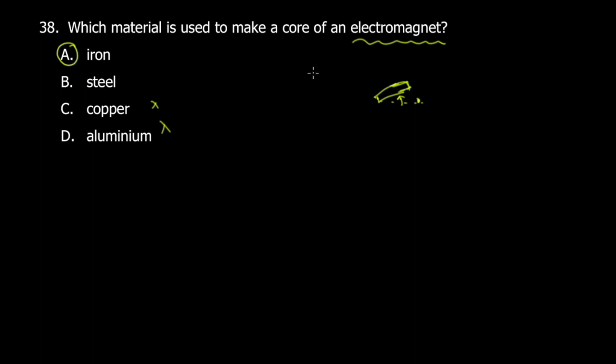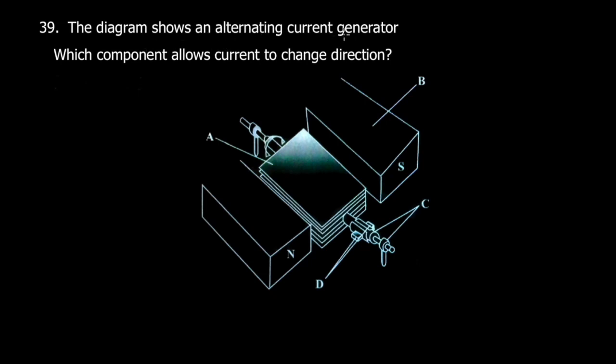Let's quickly move to the next part. Diagram shows an AC generator. Which component allows current to change direction? The component that allows current to change direction—here these are brushes, and here these are slip rings.